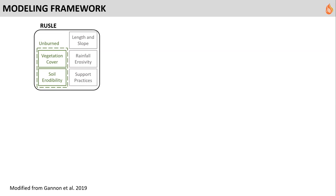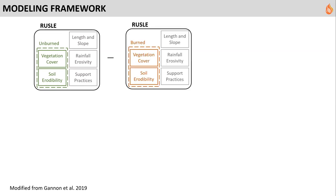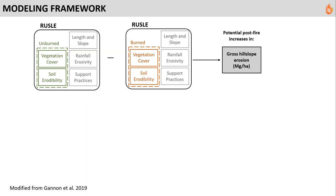We first run the RUSLE model for the unburned scenario to get a baseline idea of what erosion would look like. We then use the classified soil burn severity map from the US Forest Service BAER team — Burned Area Emergency Response — who get out in the field immediately following the fire to field-validate soil burn severity. We use the classified severity to make proportional adjustments to both vegetation cover and soil erodibility, then rerun RUSLE to get the estimated burned erosion. We difference the two scenarios, and the output is potential post-fire increases in gross hillslope erosion due to wildfire.